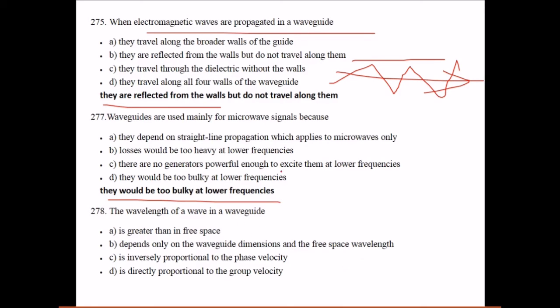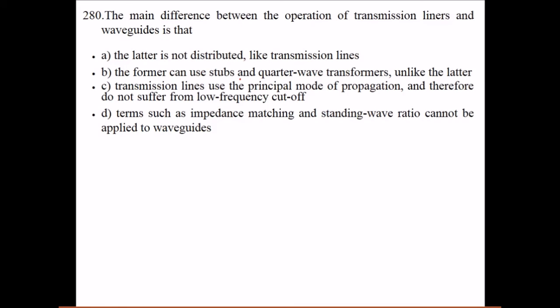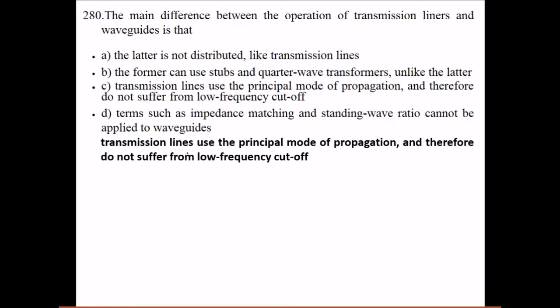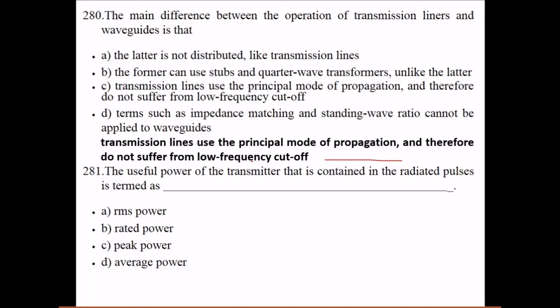The wavelength of a wave in a waveguide is greater than in free space. The main difference between the operation of transmission lines and waveguide is that transmission lines use the principal mode of propagation and therefore do not suffer from low frequency cutoff. The useful power of the transmitter that is contained in the radiated pulses is termed as peak power. In radars, echoes that are produced when the reflective beam is strong enough to make a second trip are double range echoes.